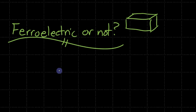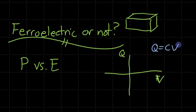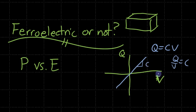Today we're going to be going over the polarization versus electric field curve. For a typical capacitor, if we have charge on one side and we apply an electric field or voltage, assuming it's an ideal capacitor where Q = CV, we get some type of linear slope, and that slope is the capacitance — Q over V equals C. When we characterize ferroelectric or dielectric materials, we don't talk about charge; we talk about polarization, which is basically charge divided by area.